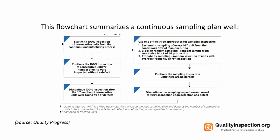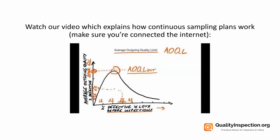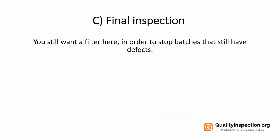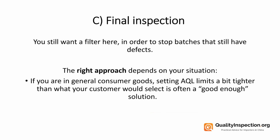A good visual representation of a continuous sampling plan is shown here — you can pause the screen and take a look. Moving on to final inspections: if you're a manufacturer and you still want to filter batches that have defects occurring even at the end of production, the right approach depends on your situation.